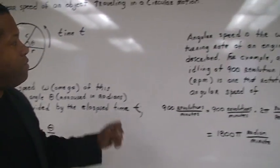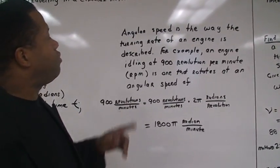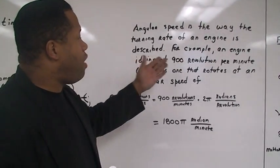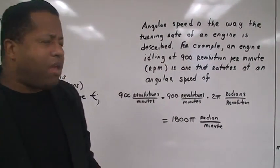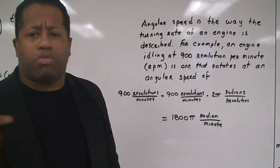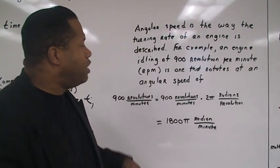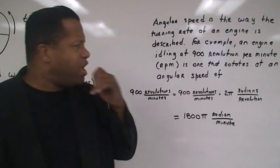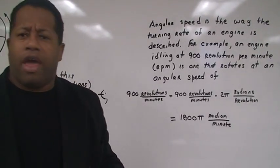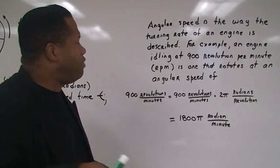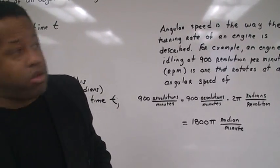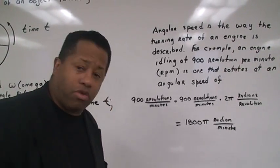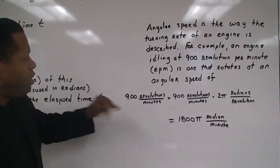Now watch this. The angular speed is the way the turning rate of an engine, let's say your car, is described. When your engine is idling, say probably at 900 revolutions per minute, is one that rotates at an angular speed. We all have cars and we know that our engine has a lot of revolutions, goes a lot of revolutions per minute, depending upon what type of car you had and if you're revving it up or if you're not revving it up, like stepping your foot on the gas pedal.